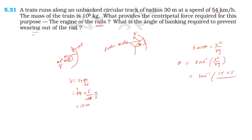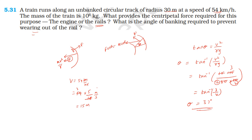15 into 15 is 225. Dividing by rg gives 225 divided by 30 into 10, which simplifies to 3 by 4. So theta equals tan inverse of 3 by 4, giving a banking angle of approximately 37 degrees. The normal force exerted provides this.